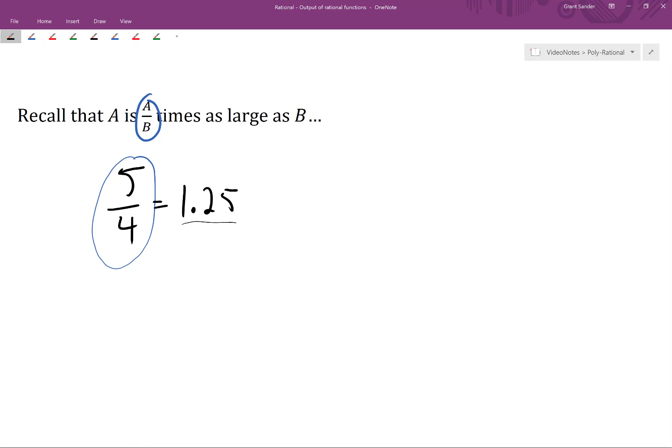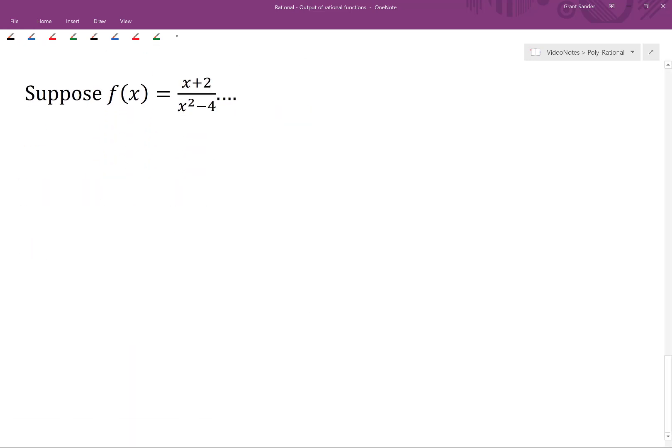Let's use this way of thinking to make sense of a specific rational function. Suppose f of x equals x plus 2 divided by x squared minus 4. When x is equal to 4, we know that x plus 2 is equal to 6, and x squared minus 4 is equal to 12.